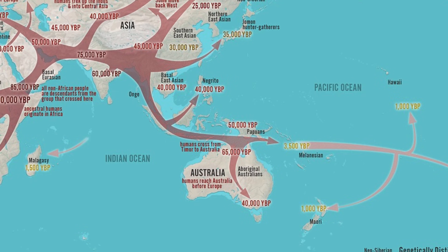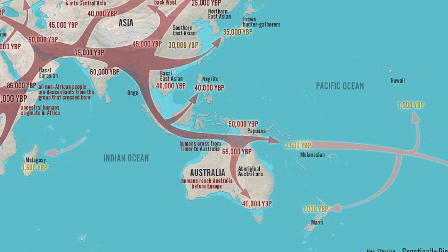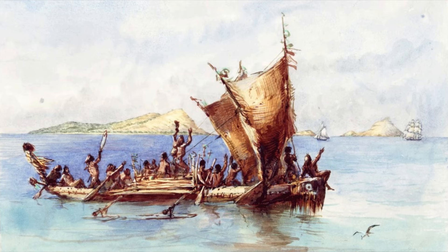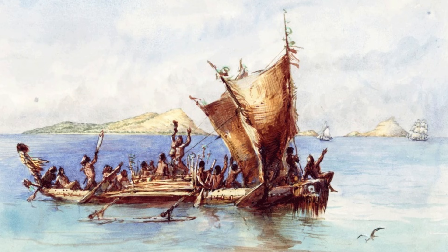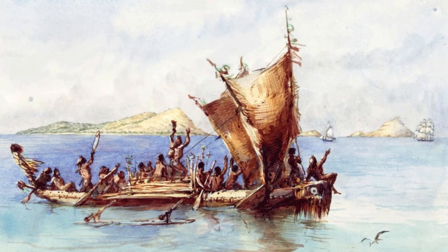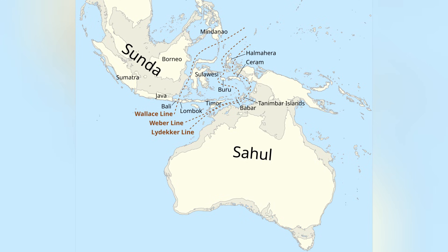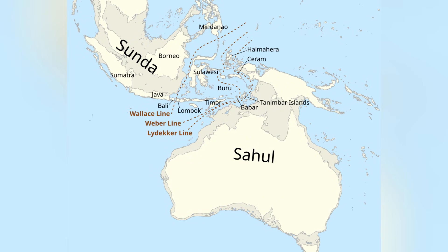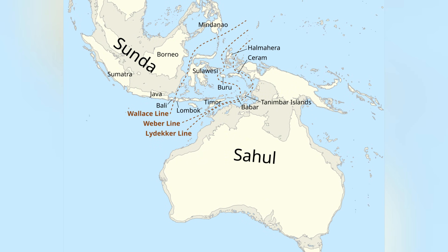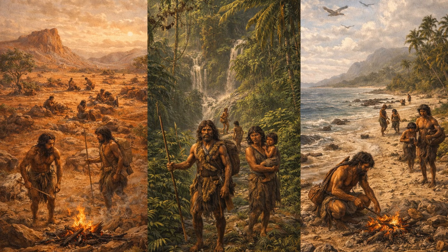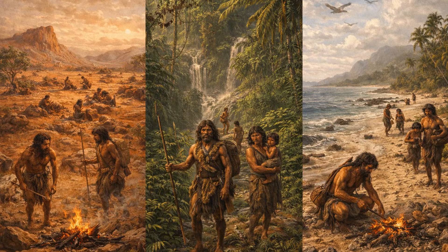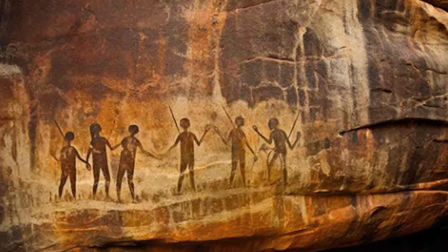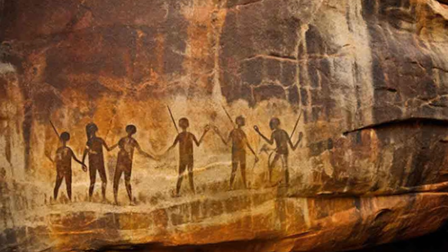Australasian Settlement. The Australasian Settlement refers to the early human migration into Australia and New Guinea, beginning roughly 50,000 to 40,000 years ago. This movement is remarkable because it required intentional sea crossings, making it one of the earliest examples of long-distance seafaring by humans. Early migrants traveled from Southeast Asia through a chain of islands, using simple boats and navigational knowledge to reach the Sahul landmass, which connected Australia and New Guinea during lower sea levels. Once settled, human populations adapted to diverse and often harsh environments, including deserts, tropical forests, and coastal regions. They developed unique cultural traditions and deep spiritual connections to the land that persist among indigenous Australian and Papuan societies today.